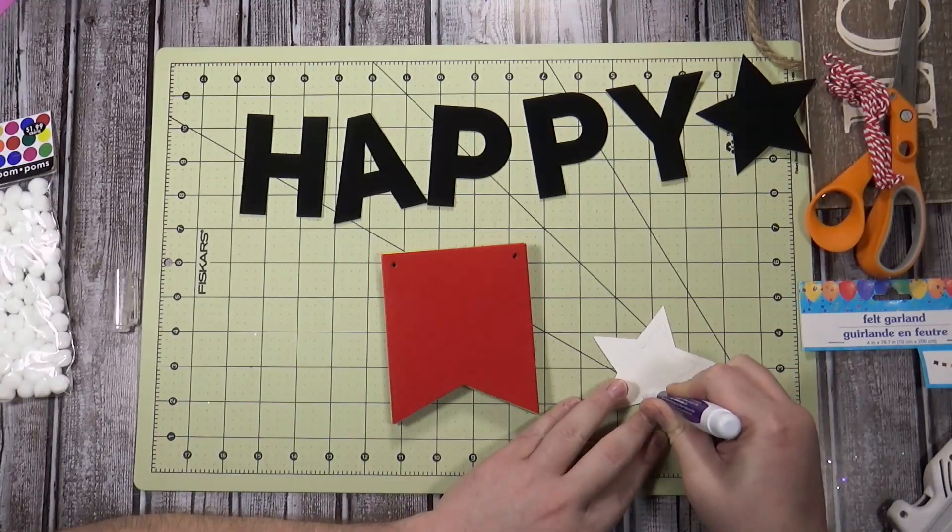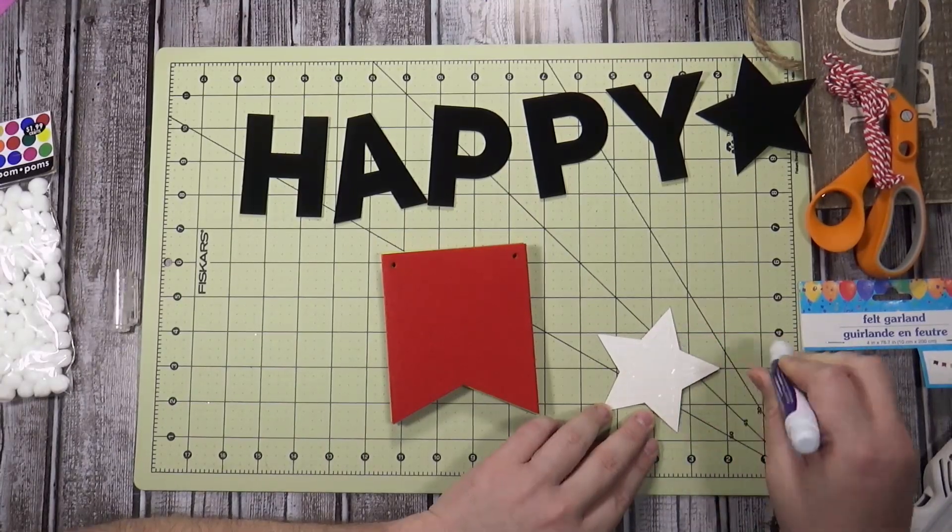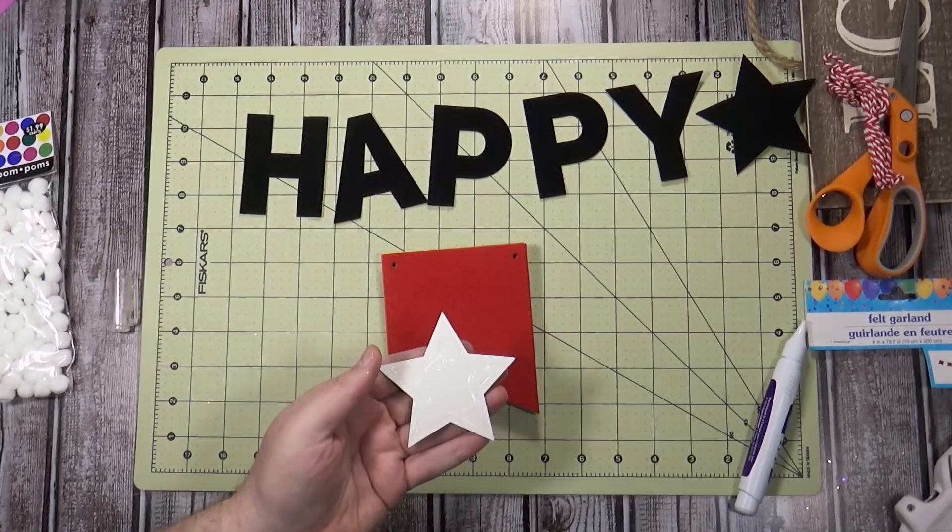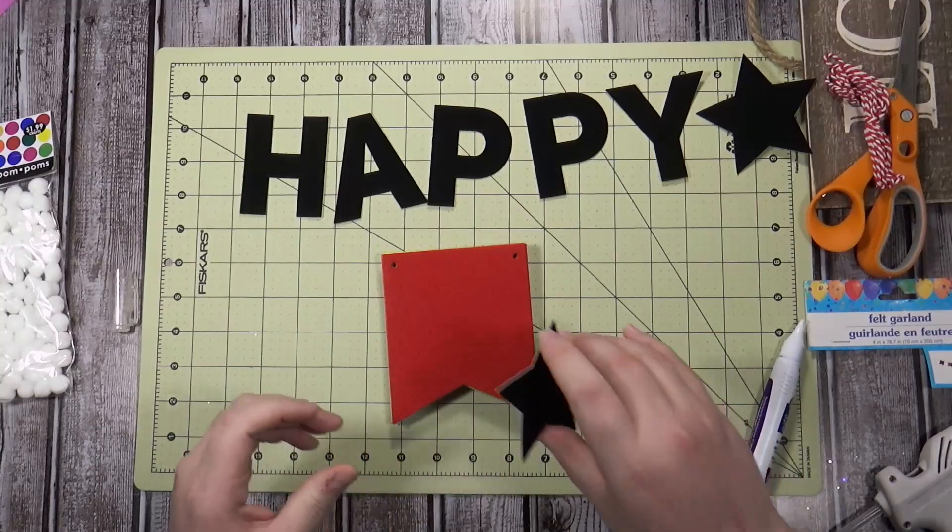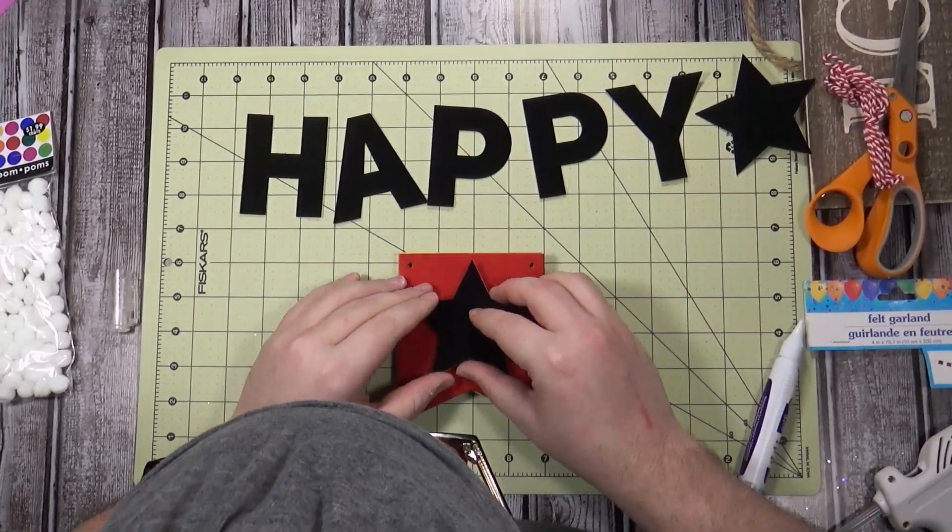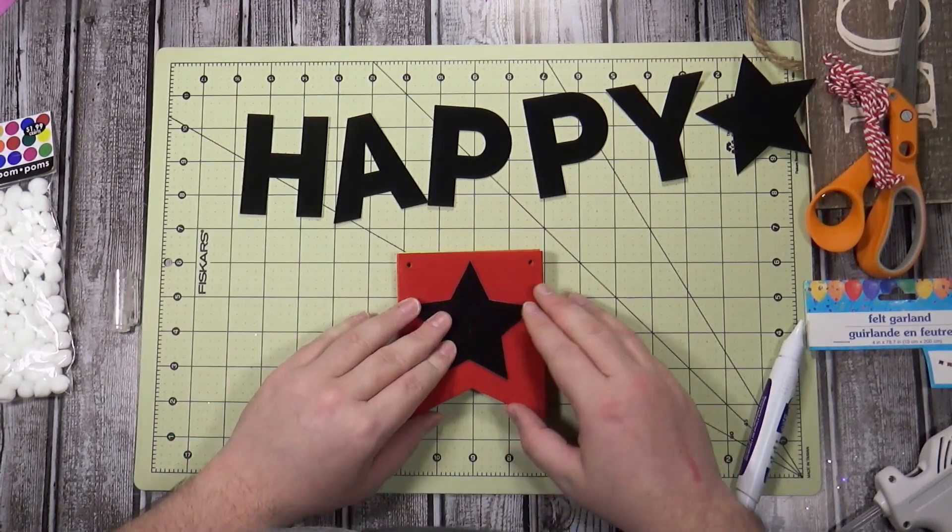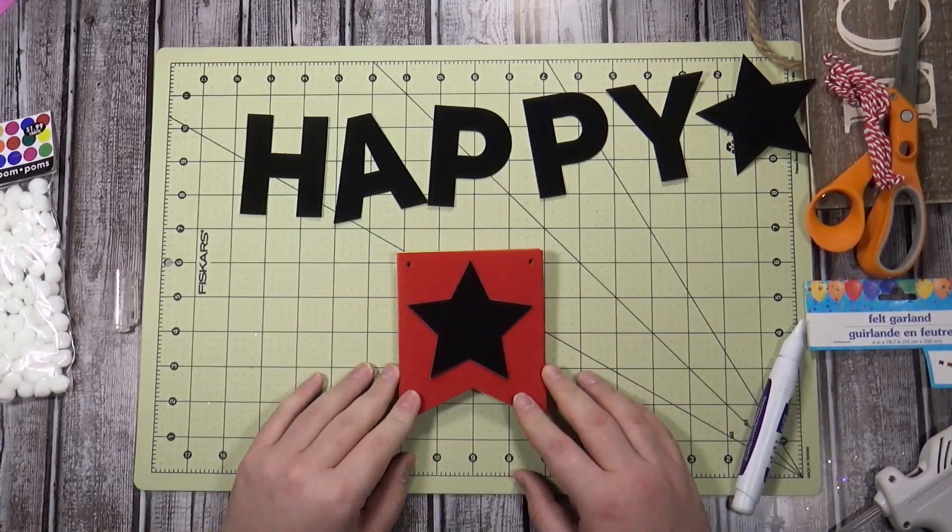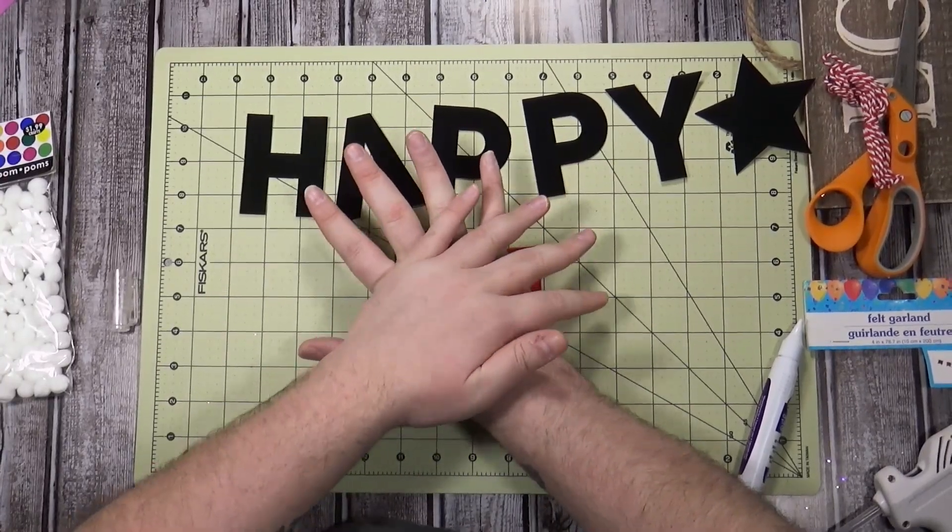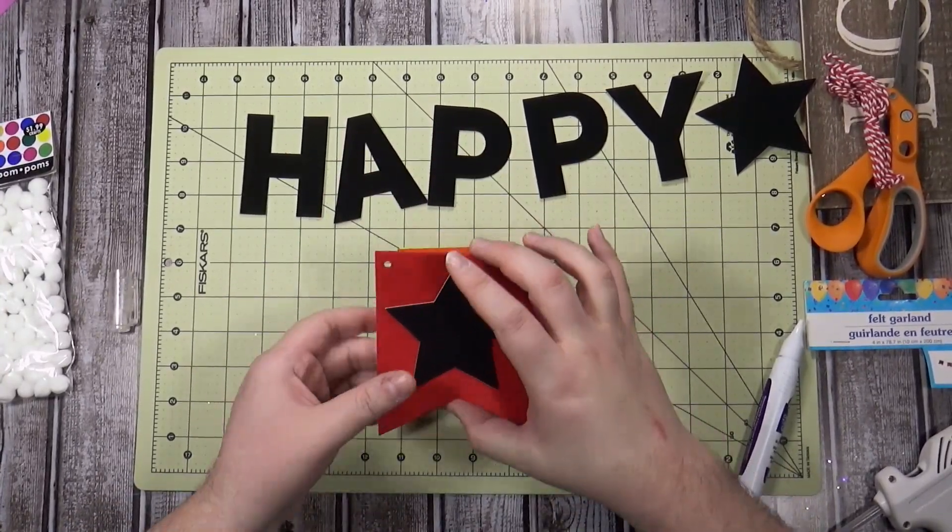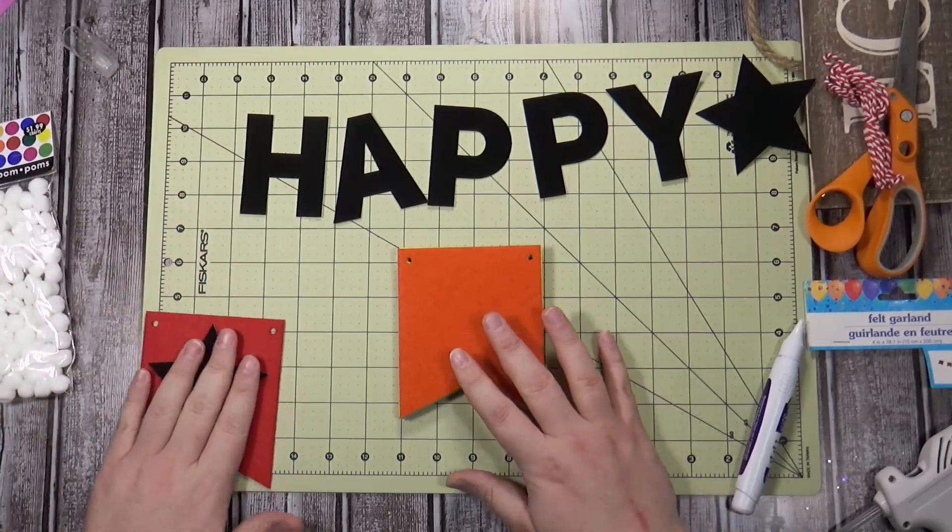I think what I am going to do is put glue all over the back of this. Holy crap that's hard to squeeze. Put glue all over and then I'm gonna put a little bit of hot glue in the middle just to hold it down. I'm gonna try to center it on here because it's centered on my mat right now. That looks like a communist thing, is that a communist thing?